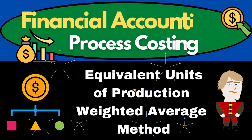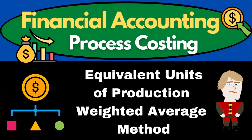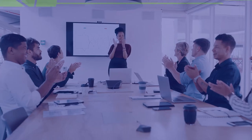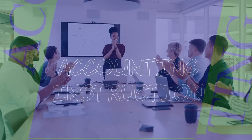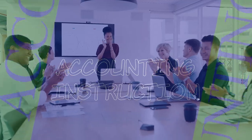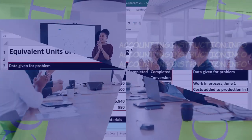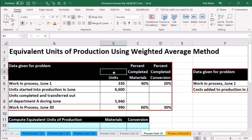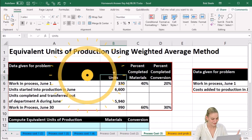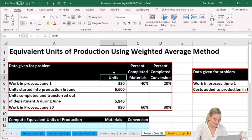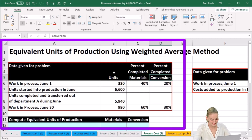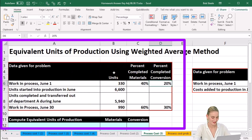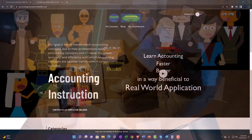In this presentation we will take a look at equivalent units of production using a weighted average method. We're going to calculate this within Excel. This is going to be our data — we have the given data in terms of units, and then we have the percent completed for materials and percent completed for the conversion.